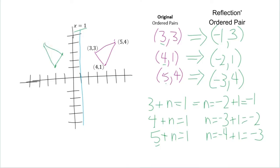So that would be reflecting when x equals 1. So there you have it: (-3, 4), (-1, 3), and (-2, 1).